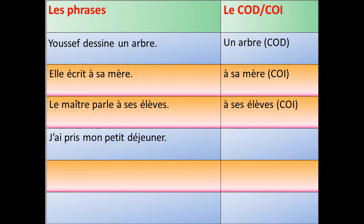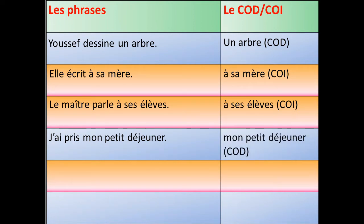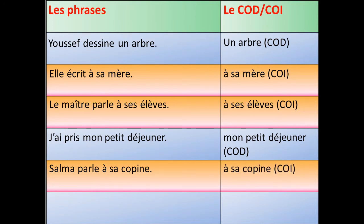Dans la quatrième phrase, nous avons : j'ai pris mon petit déjeuner. J'ai pris quoi ? J'ai pris mon petit déjeuner. Dans la phrase suivante, « à sa copine », c'est le complément d'objet indirect.